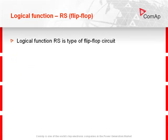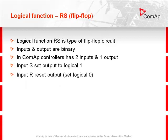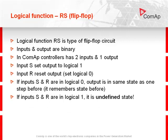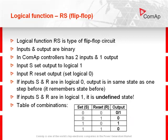Logical function RS is a type of flip-flop circuit. Inputs and output are binary. In COMAP controllers it has 2 inputs and 1 output. Input S sets the output to logical 1. Input R resets the output to logical 0. If inputs S and R are both logical 0, the output is in the same state as one step before — it remembers what was before. If inputs S and R are both logical 1, it is an undefined state; please don't use this state. In the table of combinations you can see what each input and their combinations cause.